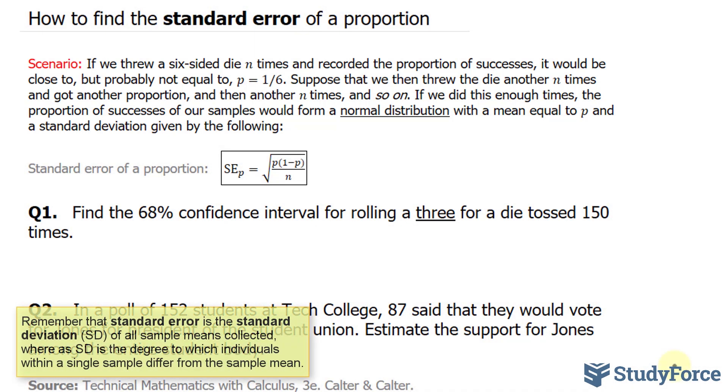The standard error of a proportion is equal to the square root of p times 1 minus p over n, where n represents the number of observations.